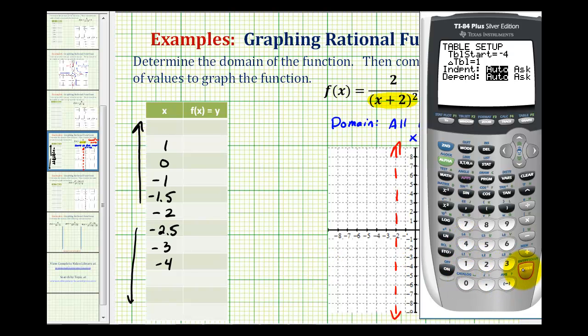And then because we have -1.5 and -2.5, we're going to make the change in the table 0.5. And we also want the independent option on automatic, which it is. So now if we press second graph,